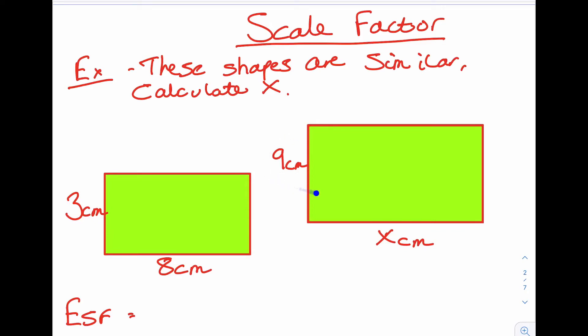Since we are trying to find the big side, we start with an enlargement scale factor. So we start with a big side over the small side. So the scale factor in this case is 9 over 3, 9 divided by 3, which in this case is 3. So that's our scale factor.